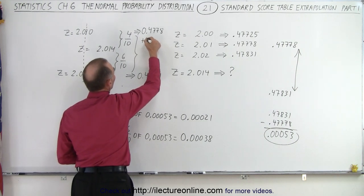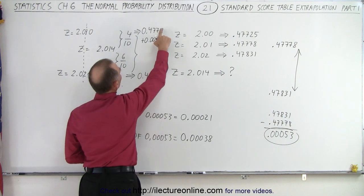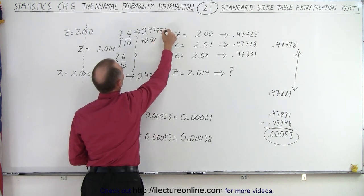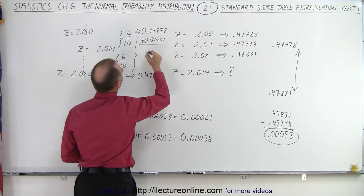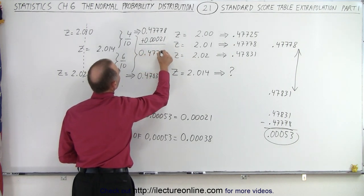So we go plus 0.00, am I missing? I'm missing a 7 here, 78021. If I add that, I get 0.47799. And that's the value that corresponds to the more accurate Z.